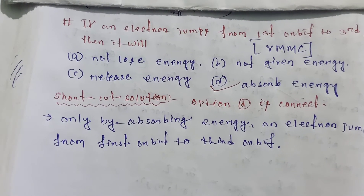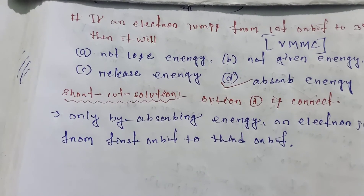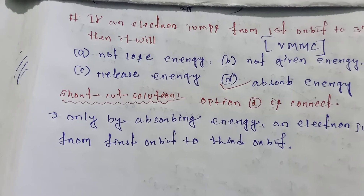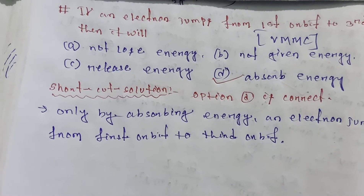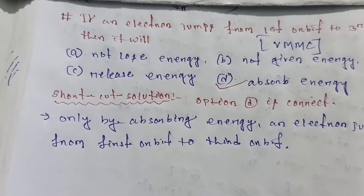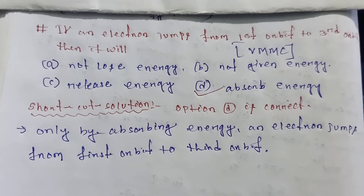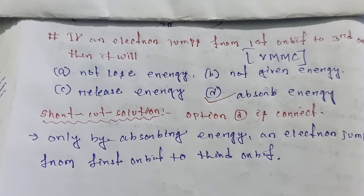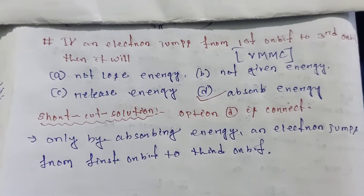When an electron moves from the first orbit to the third orbit, that means it moves from a lower to a higher energy level. When an electron moves from lower to higher level, it always absorbs energy. When an electron jumps from higher to lower level, it always emits energy. So the correct answer is absorbed energy, because the electron moves from lower to higher level.